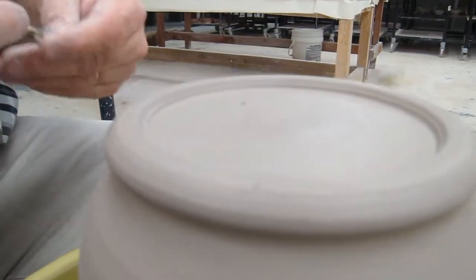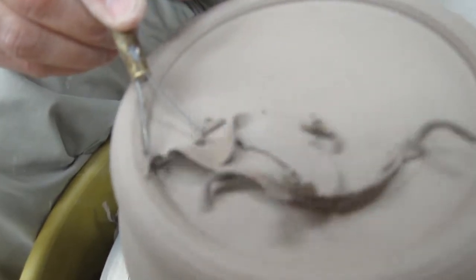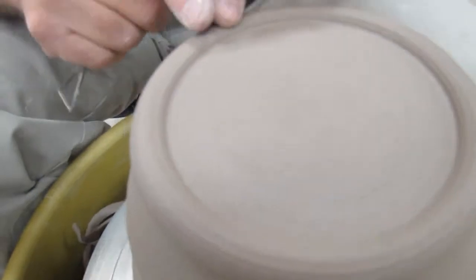I then finish trimming by just addressing some of these edges. Another thing that I'm concerned about is I don't want this surface of the foot to scratch things or to try to limit scratching. I take my fingers and I smooth that surface.